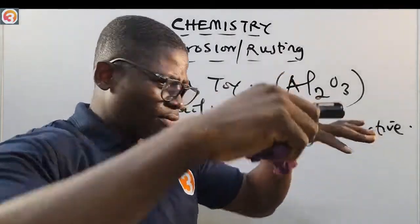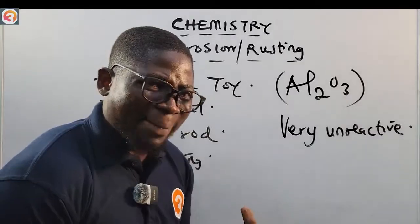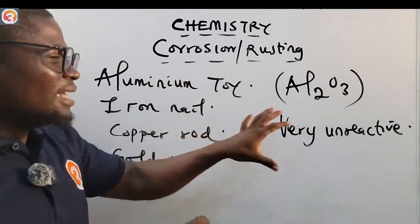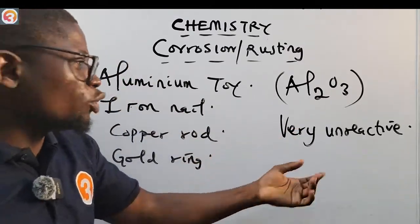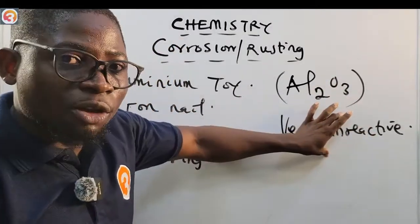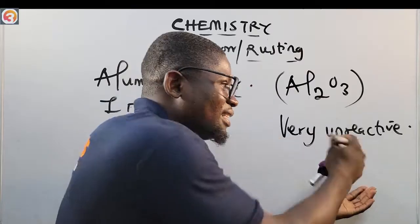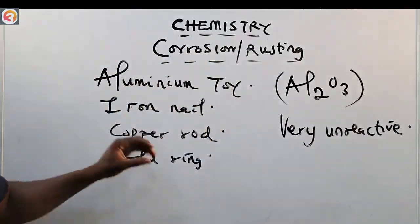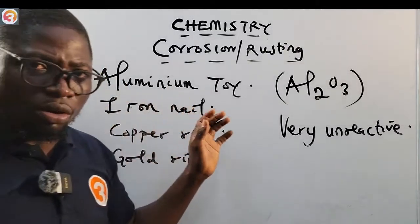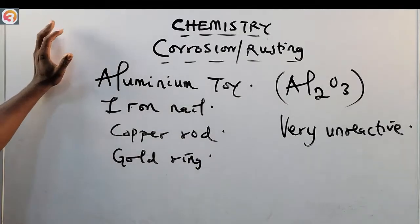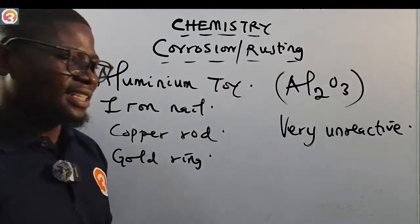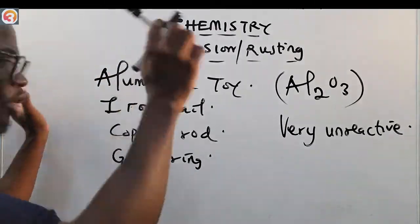Once the aluminum oxide forms, it binds tightly with the surface of the aluminum and prevents further corrosion. Because the surface is now covered by aluminum oxide, nothing can react with it further to cause rusting. But the iron nail, once it reacts with oxygen, rusting occurs. So among the four materials, the iron nail corrodes fastest. Corrosion is a term used for all metals, but rusting is specific — we say the iron nail has undergone rusting.